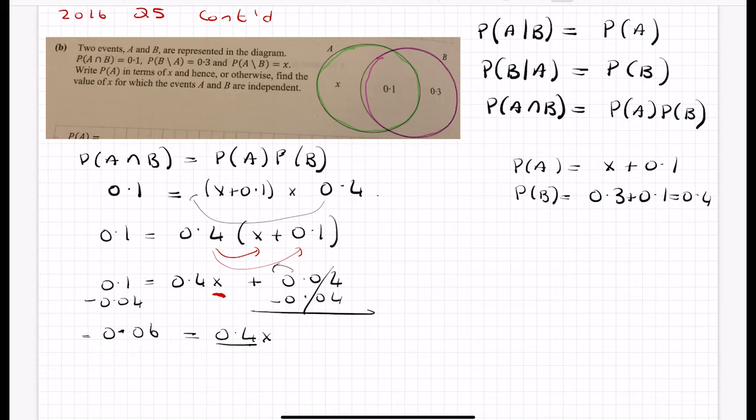Divide by the number in front of X so that you get X being equal to - put that into a calculator - not 0.15. Just check that again. Okay, 0.15. So that's what my X is.